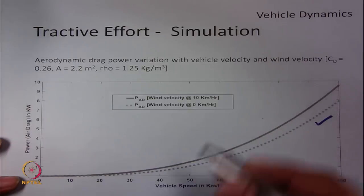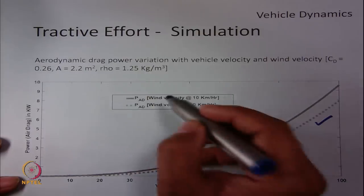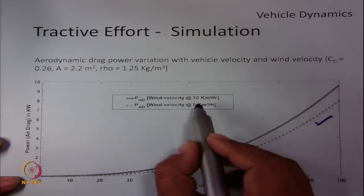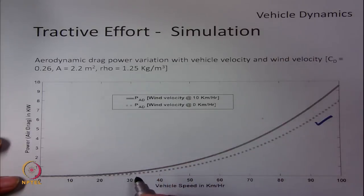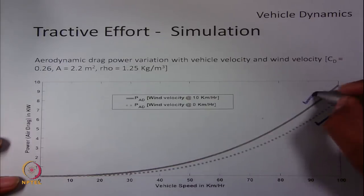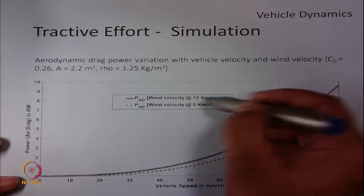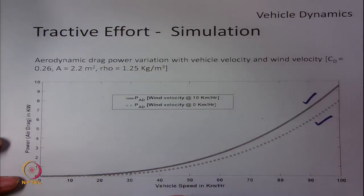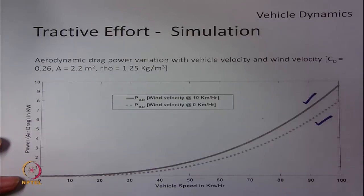Additionally, if there is a strong headwind of 10 km/h opposing the vehicle movement, the second curve shows that effect. With a wind velocity of 10 km/h opposing motion, you need extra power of around 2 kW at 100 km/h.